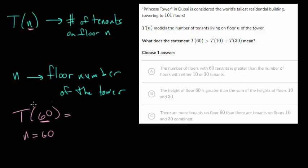So this essentially represents the number of tenants on floor 60. So T of 10 would be the number of tenants on floor 10. Since our N value is 10, and N is which floor of the tower we're talking about. So this is the number of tenants on floor 10.